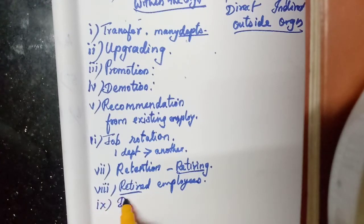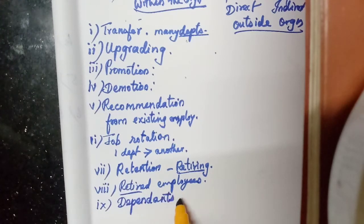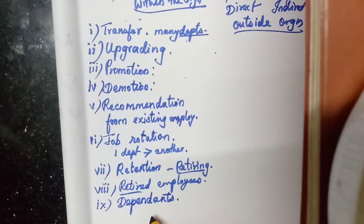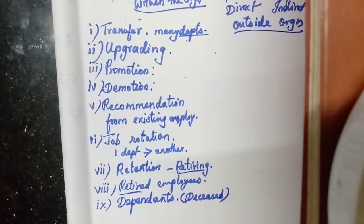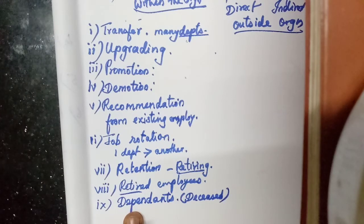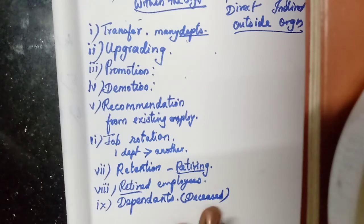Dependents: the legal care of the employees. For example, they will provide this opportunity for the deceased employees. Deceased means if a person dies — after the death of an employee, that job will be given to his dependent, the legal heir. Maybe if a man dies, his job will be given to his wife or the first son or first daughter. So the deceased employee's job will be provided to his dependents.